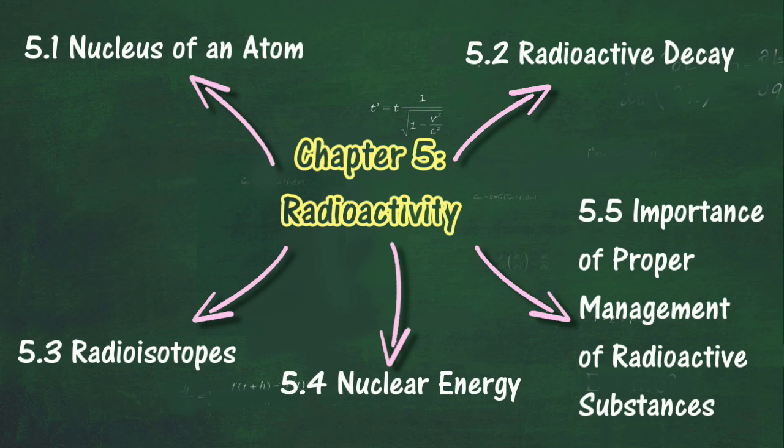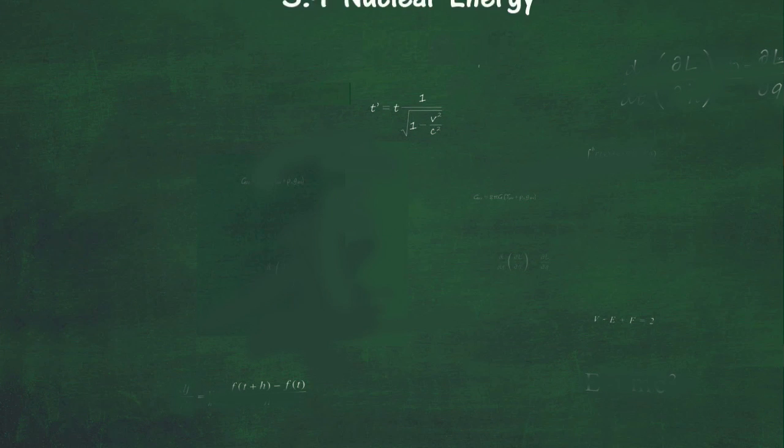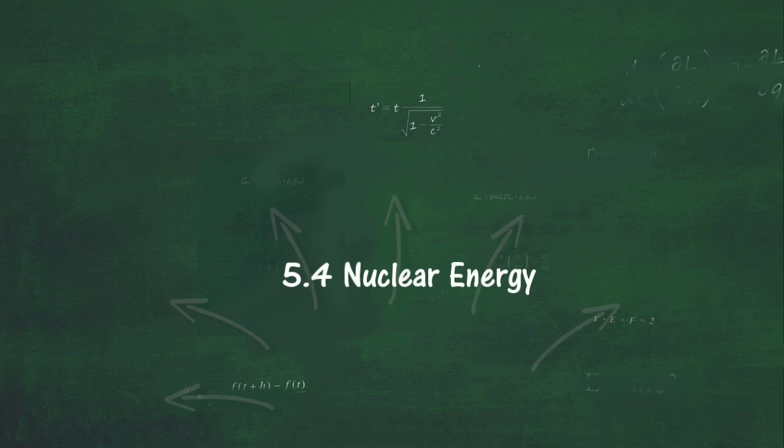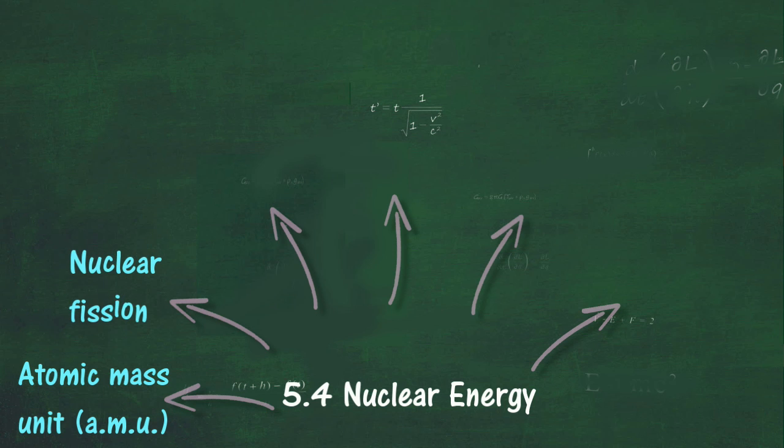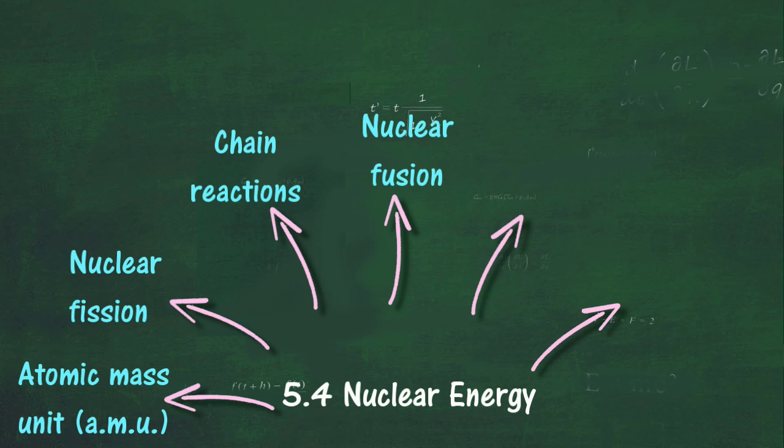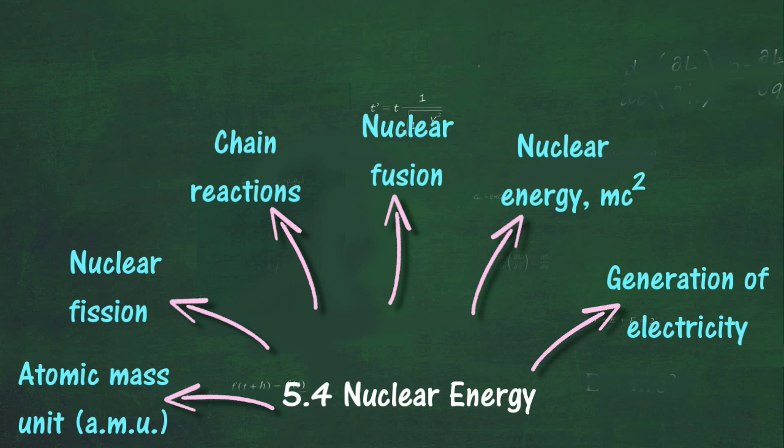In Section 5.4, we will learn about nuclear energy. At the end of this section, you should be able to define atomic mass unit (AMU), describe nuclear fission, give examples of nuclear fission, describe chain reactions, describe nuclear fusion, give examples of nuclear fusion, relate the release of energy in the nuclear reaction with the change of mass according to the equation E equals mc squared, describe the generation of electricity from nuclear fission, justify the use of nuclear fission in the generation of electricity, and solve problems involving nuclear energy.